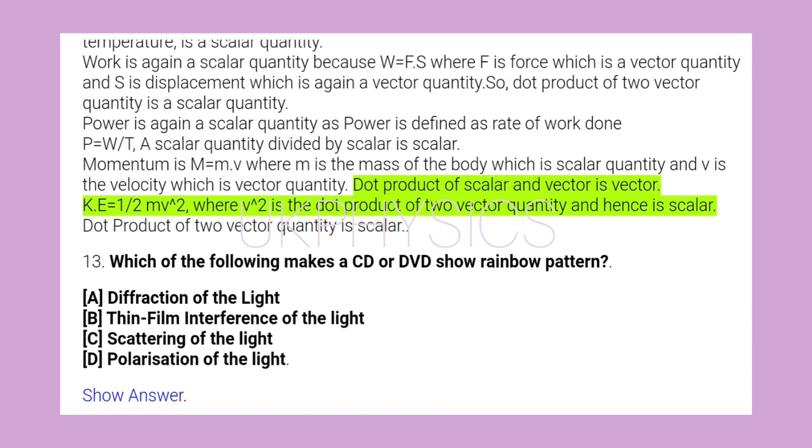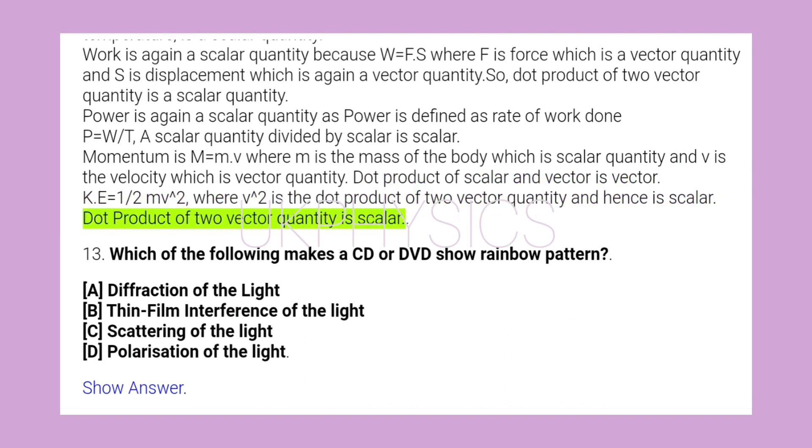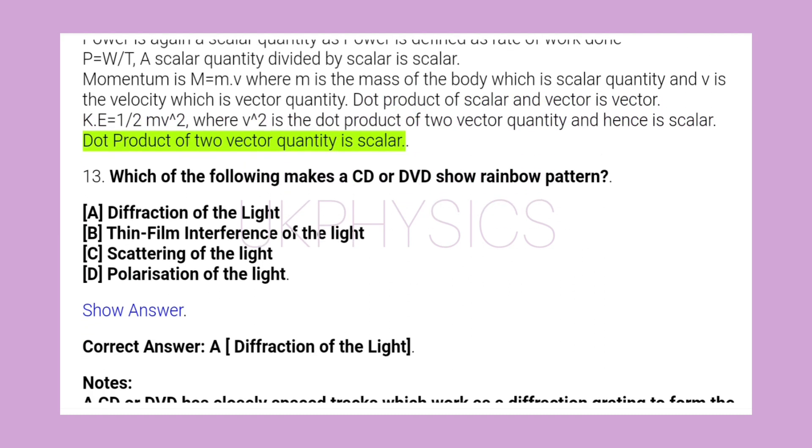Dot product of scalar and vector is vector. KE = 1/2 m·v² where v² is the dot product of two vector quantities and hence is scalar. Dot product of two vector quantities is scalar.